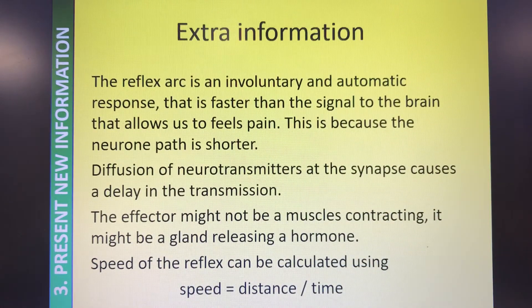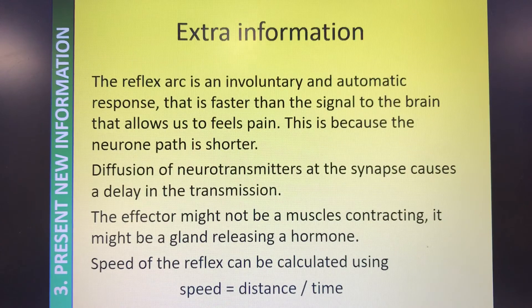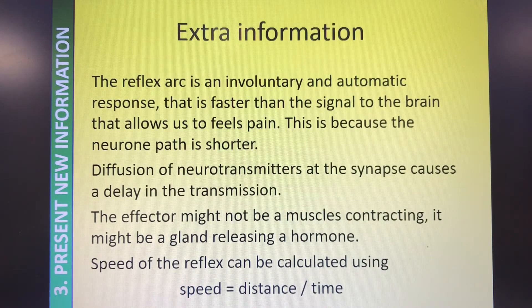The reflex is involuntary and automatic. There's another signal going to the brain that is longer, and it takes longer for this response - that's why we feel the pain after. We get away from the danger first, and then we feel the pain because the signal to the brain that makes us acknowledge the pain is much longer. The diffusion of the neurotransmitter at the synapses causes a delay in transmission. The effector may be a muscle or a gland. They may also ask you to calculate the speed of a reflex if they give you the time of the reflex and the length of the neurons, and then the question may follow: why was it slower than expected? That's where we link in the synapses.